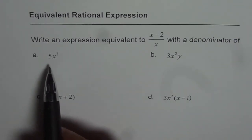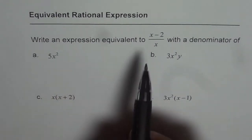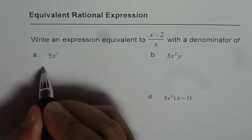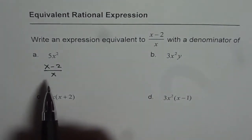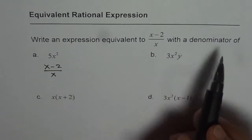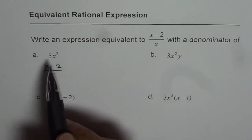In the first example, we have to write an expression which is equivalent to x minus 2. Let me write down x minus 2 over x. But we need a denominator of 5x squared.